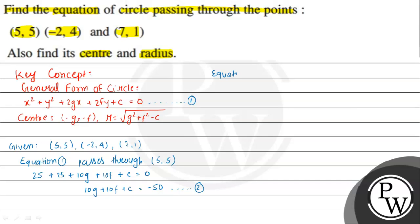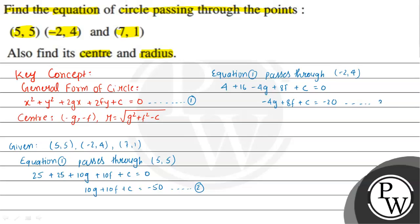Again, equation 1 passes through point (-2, 4). So we put x = -2 and y = 4 into equation 1. We get 4 + 16 - 4g + 8f + c = 0, which gives us -4g + 8f + c = -20. We consider this as equation 3.